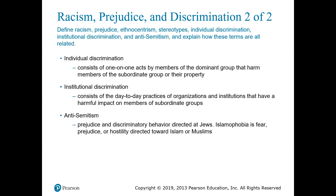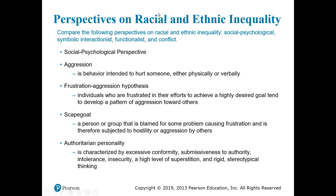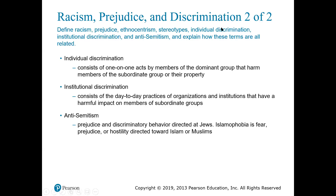In addition to racism and prejudice, individual discrimination consists of one-on-one acts by members of the dominant group that harm members of the subordinate group or their property. Institutional discrimination consists of the day-to-day practices of organizations and institutions that have harmful impacts on members of subordinate groups. This can include anti-Semitism — hostility or prejudice towards people who identify as Jewish, from Israel, or who identify as Jews. There is also Islamophobia, which is fear, prejudice, or hostility directed towards Islam or Muslims.